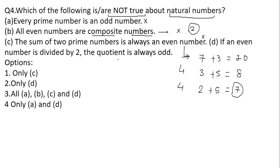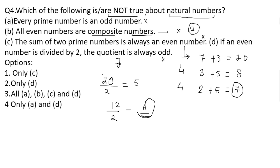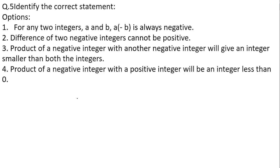Statement 4: if an even number is divided by 2, the quotient is always an odd number — also wrong. For example, 10 ÷ 2 = 5 (odd), but 12 ÷ 2 = 6 (even). So it is not compulsory that dividing an even number by 2 always gives an odd number. All four statements A, B, C, and D are wrong about natural numbers. Question 4's correct answer is option number 3.